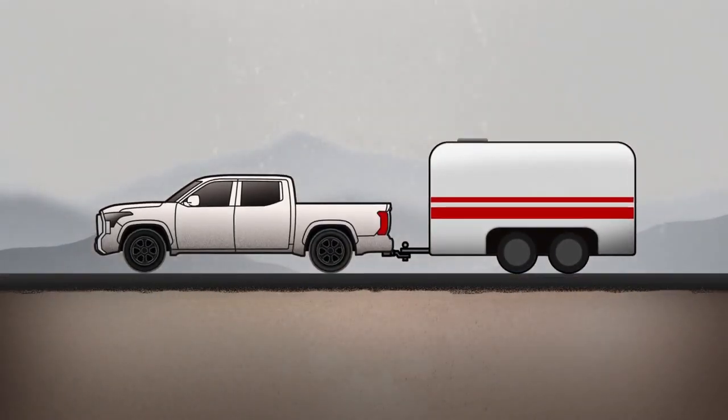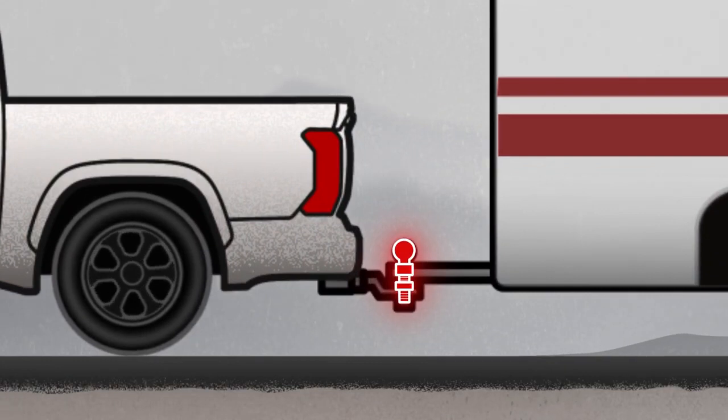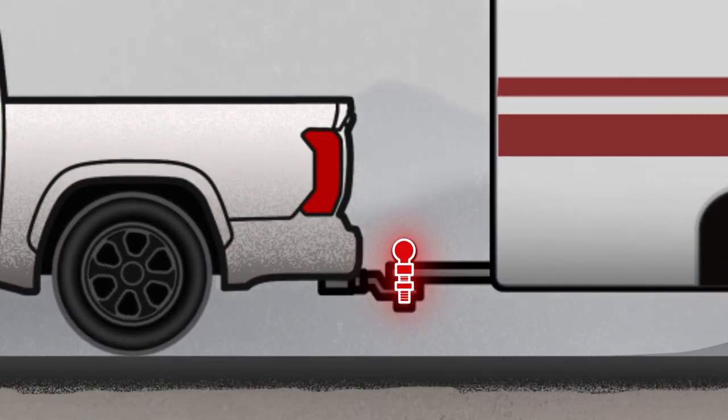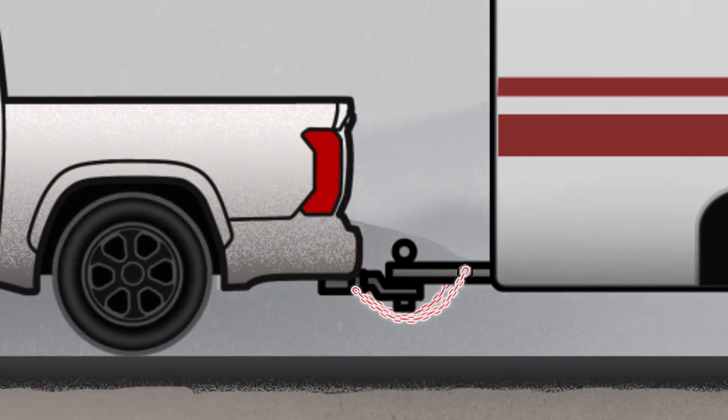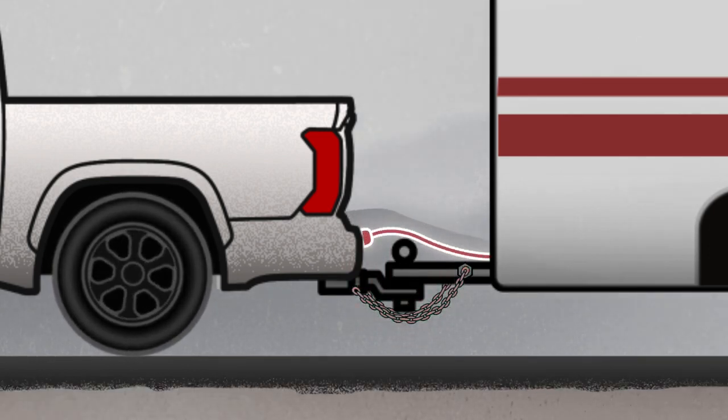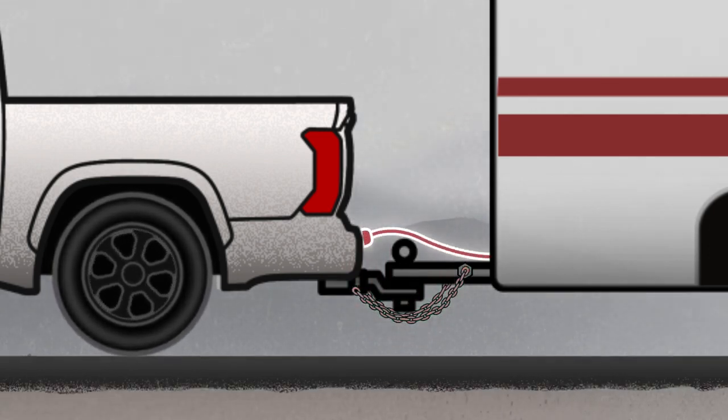When the time comes to hook the trailer up to the vehicle, ensure that both the proper mechanical and electrical connections are made. This means confirming the ball hitch is the correct size for the trailer before attaching it to the vehicle. Once coupled, it's also important to hook up and cross the trailer safety chains, then hook up the electrical connector and emergency brake cable.